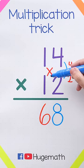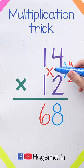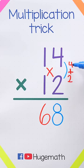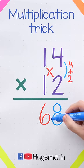And once again, 1 times 2 equals 2. 1 times 4 equals 4. 4 plus 2 equals 6.